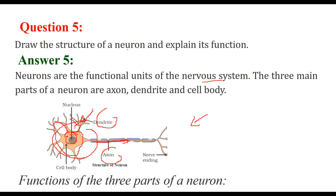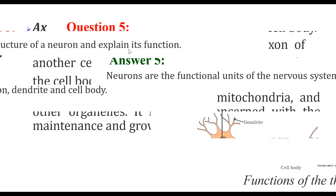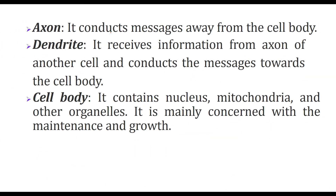The axon conducts messages away from the cell body. The dendrite receives information from the axon of another cell and conducts the message towards the cell body — the axon sends messages away, the dendrite takes messages towards the cell body. The cell body contains all cellular contents: nucleus, mitochondria, and other organelles, and is mainly concerned with maintenance, growth, and development.